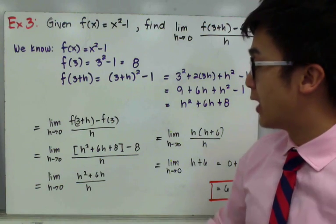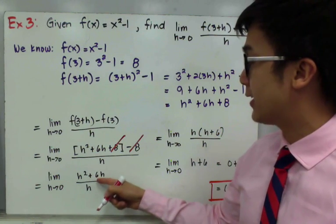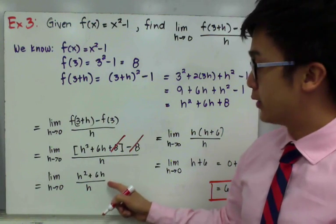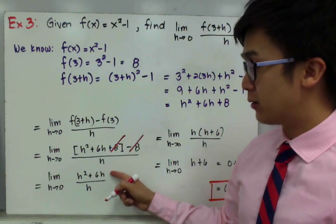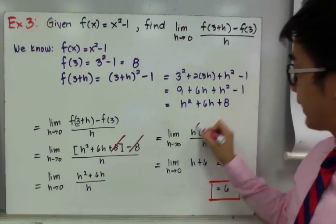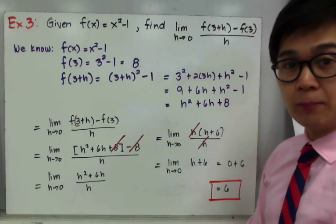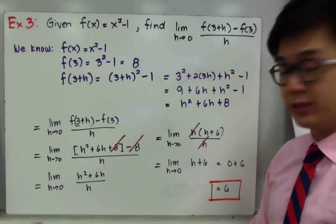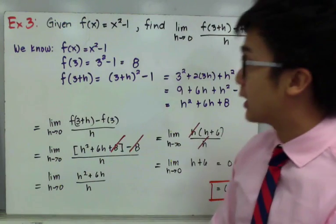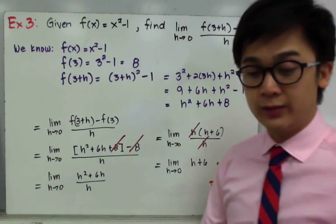By simplifying, we cancel 8 and negative 8, leaving h squared plus 6h all over h. Direct substitution would give an undefined result, so we factor the numerator as h times the quantity h plus 6, then cancel h, leaving h plus 6 as h approaches 0. Replacing h with 0 gives us 0 plus 6, which equals 6. Therefore, by the difference quotient procedure, this particular limit as h approaches 0 is equal to 6.